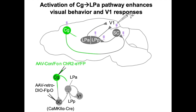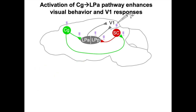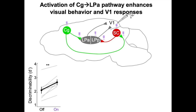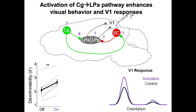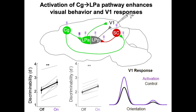In addition to SC, Cg neurons also send axon collaterals directly to LP. The SC projects to posterior LP, but the Cg projects to anterior LP. Activation of Cg axons in the anterior LP causes strong enhancement of both behavioral performance and V1 responses to drifting gratings. Direct activation of anterior LP neurons causes similar behavioral and neuronal effects.